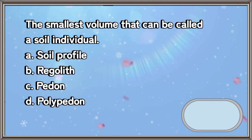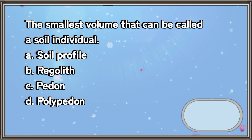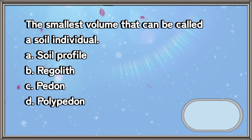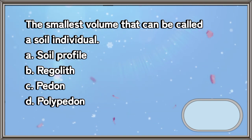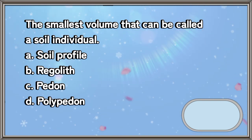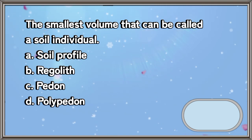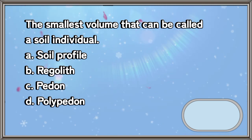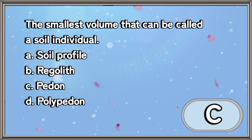The smallest volume that can be called a soil individual. A. Soil profile. B. Regolith. C. Pedin. D. Polypedin. The answer is letter C.